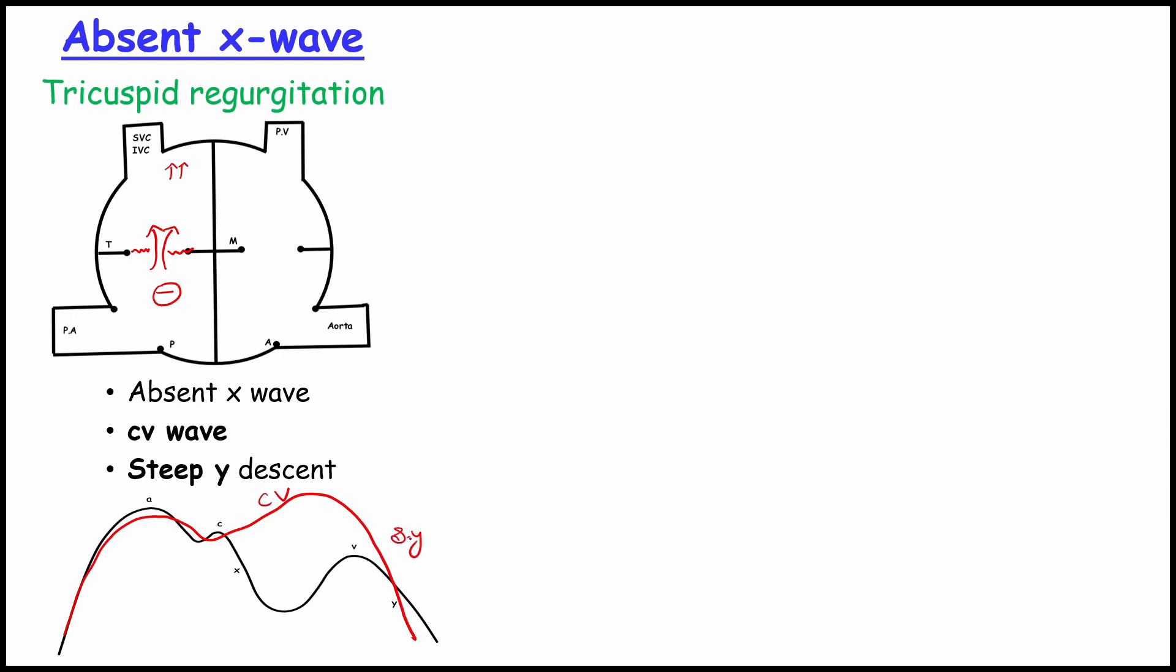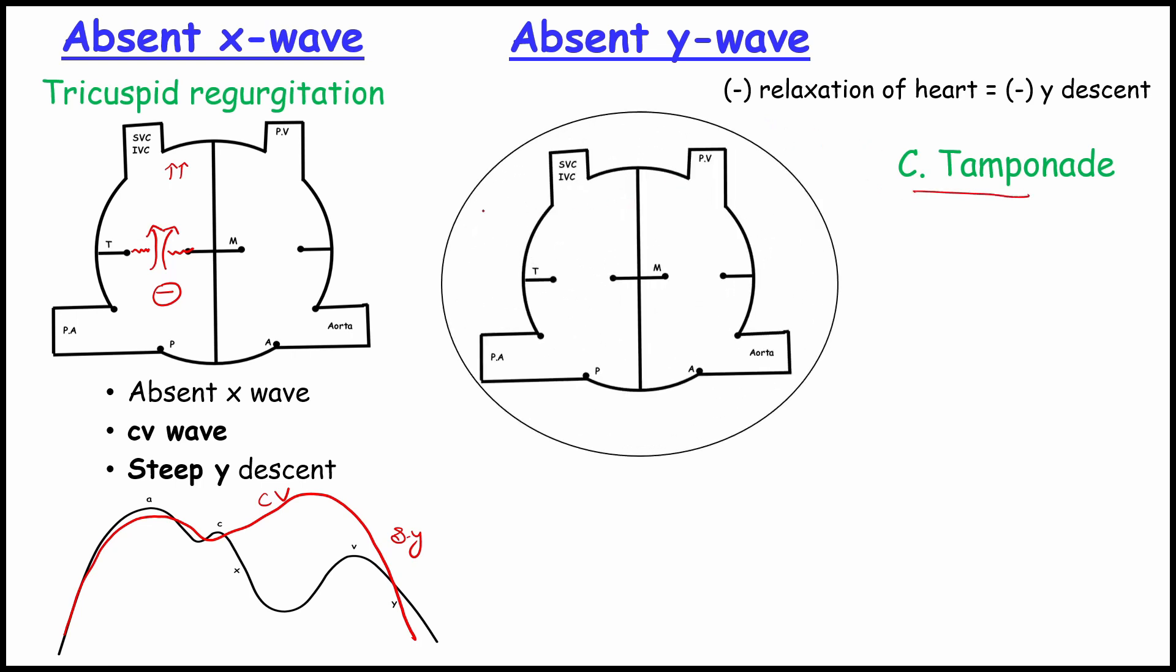And the last one is absent of Y descent. Normally Y happens in relaxation of the heart. But during cardiac tamponade, there will be a problem with relaxation. Due to high pressure in the pericardial sac pushes the heart inwards and also constriction of the vessels will decrease the blood filling. So absence of Y wave seen.